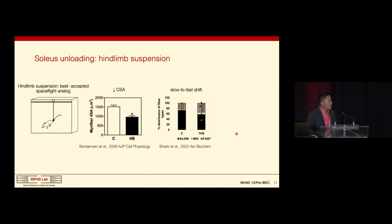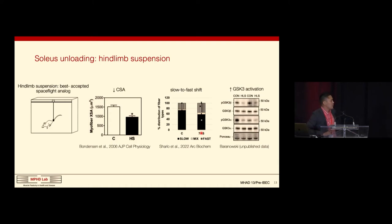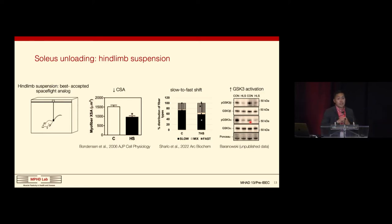The second model of soleus unloading is hindlimb suspension — the best accepted spaceflight analog. We suspend mice by their tails for 7 to 14 days, effectively unloading the soleus and leading to muscle atrophy and a fast fiber type shift — a decline in slow fiber proportion in as little as 7 days. Unpublished work from master's student Ryan Baranowski shows that after 7 days of hindlimb suspension, there is lower phosphorylation of both GSK-3-beta and GSK-3-alpha in the soleus, suggesting GSK-3 is more active in both isoforms.